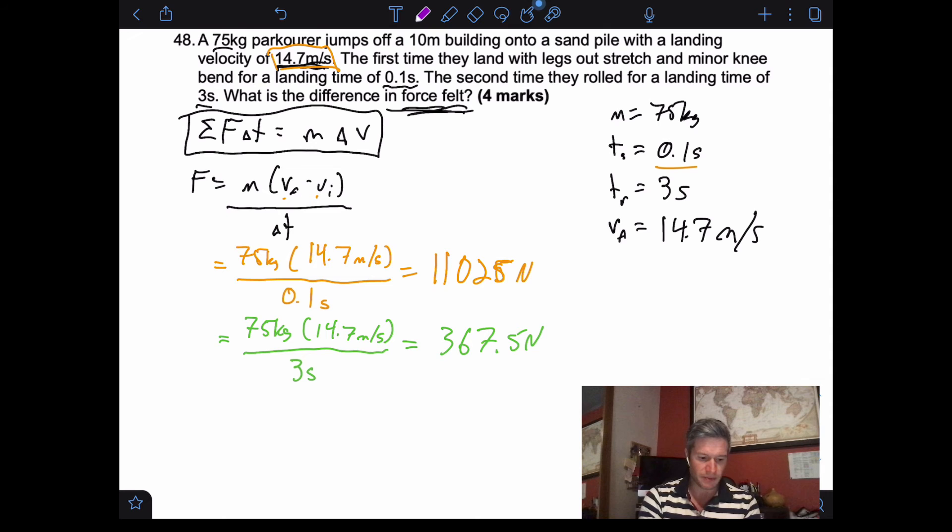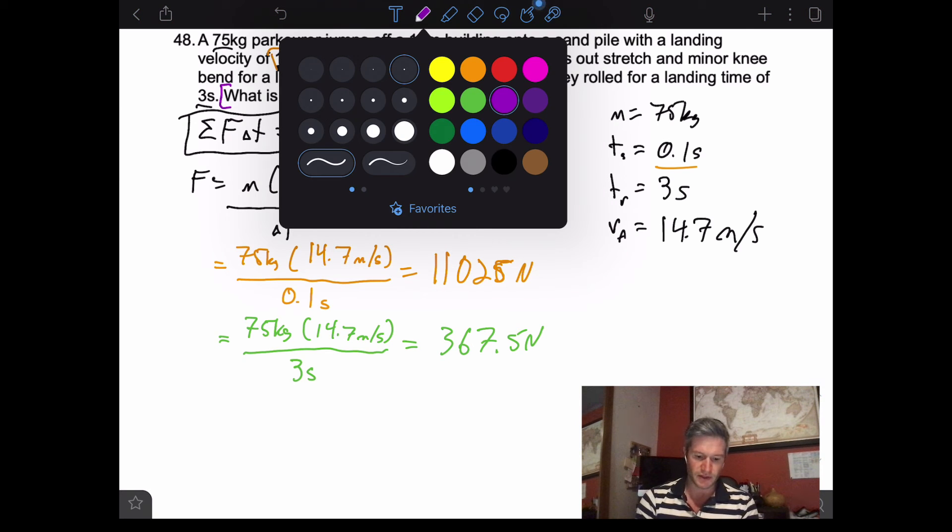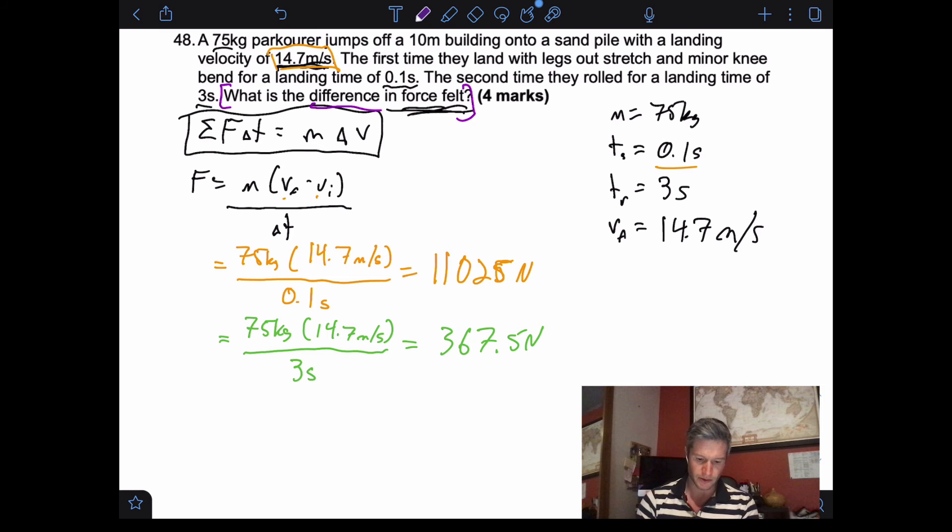But again, sometimes the last step that people miss is this right here. Okay, what is the difference? It's not just saying calculate that, but it's also saying what is the difference. So if we got that far, we might as well finish all the way. Let's just pick a new color for the combination. So I'm going to take these two values, subtract them from one another to find the difference in forces felt. And when we do that, we get 10,657 newtons. That was 0.5, so I guess it would be 0.8 newtons. And so that is the change or the difference between the two.